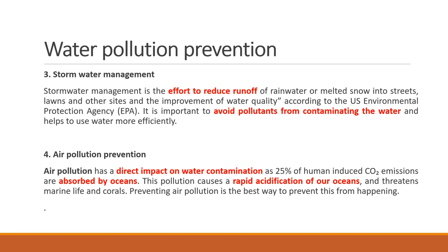Storm water management is important — we can reduce rainwater runoff through rainwater harvesting, which provides a relatively uncontaminated water source. Air pollution prevention is also important, as industries emit sulfur oxides and nitrogen oxides. These oxides react with water vapor in the air to produce nitric acid and sulfuric acid, leading to acidification of the oceans, which harms marine life and corals. Air pollution therefore has an indirect impact on water pollution.